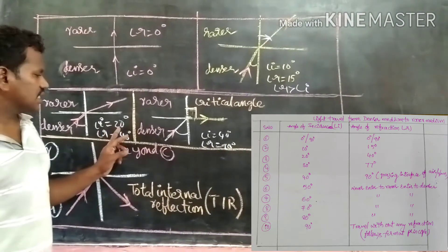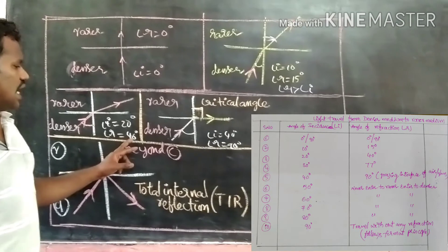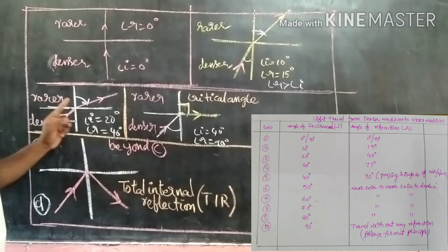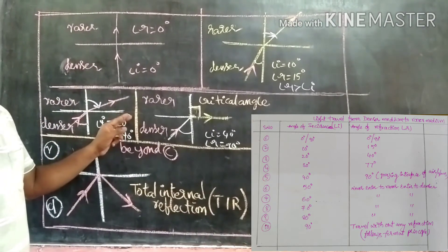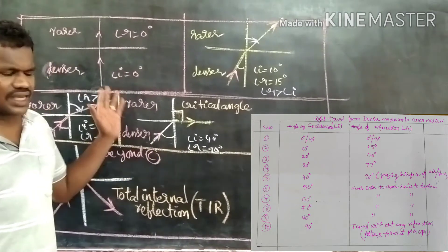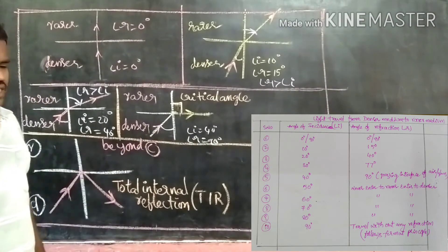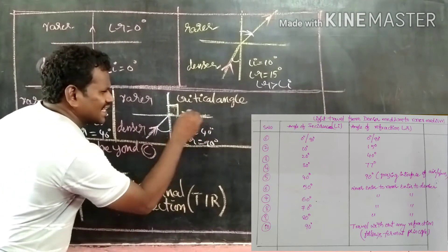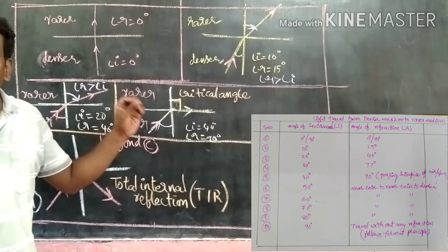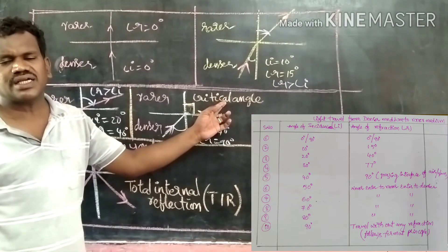In the next case, angle i is 20 degrees and angle r becomes 40 degrees. When traveling from denser to rarer, the light ray deviates away from the normal, and we can prove that angle r is greater than angle i. Like 30 degrees — whenever it reaches approximately 40 degrees or beyond 40 degrees, if you observe, the light ray is grazing the interface of both rarer and denser. Such an angle of incidence is called the critical angle.